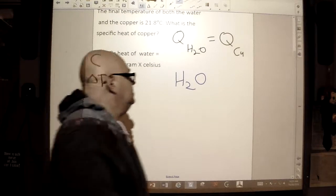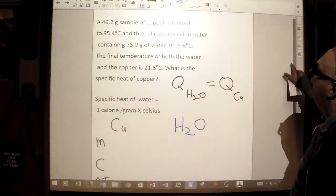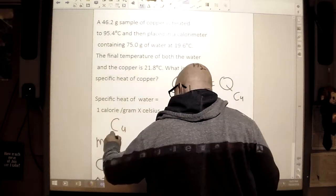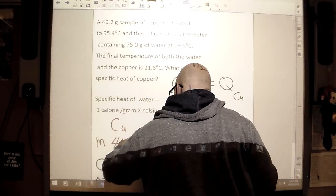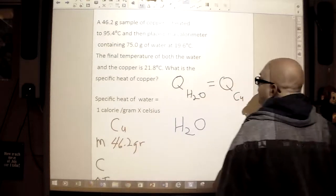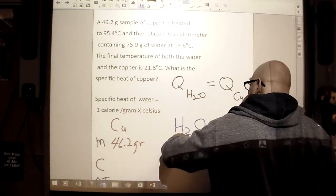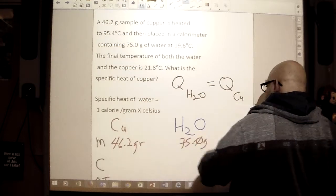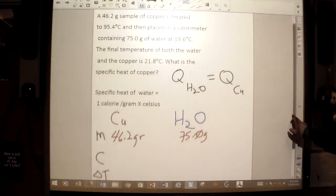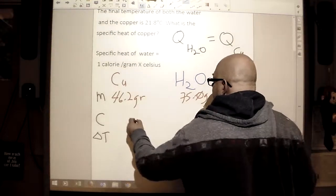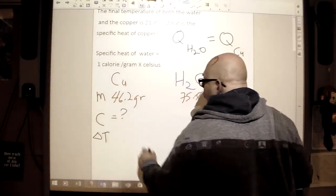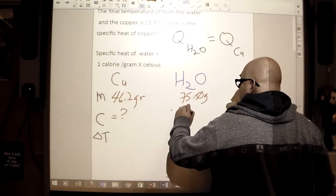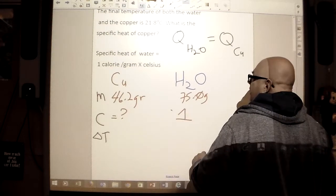When we look at the mass, we've got a mass of 46.2 grams for copper. And for water, it is 75.0 grams. We have a specific heat, well, we don't know what it is about the copper, but we definitely know about the water, don't we, because it's one. One calorie.